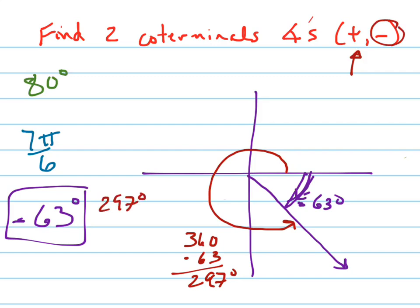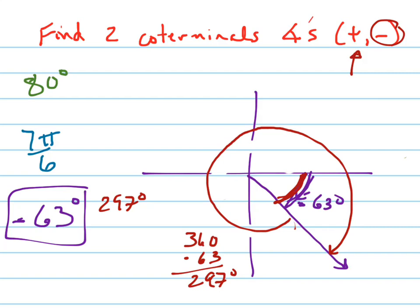The trickier one is the negative coterminal, because we're going to keep going in the same direction, negative. So we're going to actually be over 360. That angle right there is 360 plus another 63, but in the negative direction. So it's negative 360 plus negative 63, which is negative 423, and that's your answer.